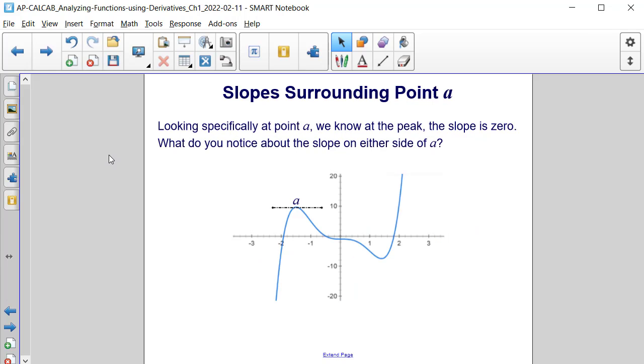Looking specifically at point A, we know at the peak here that occurs, the slope is zero. What do you notice about the slope on either side of A?